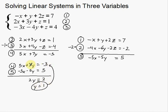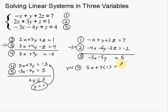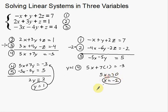If I plug y = 1 into equation four, x will be the only variable left. That gives 5x + 7(1) = negative 3. This simplifies to 5x + 7 = negative 3. Subtracting 7 from both sides: 5x = negative 10. So x is equal to negative 2.